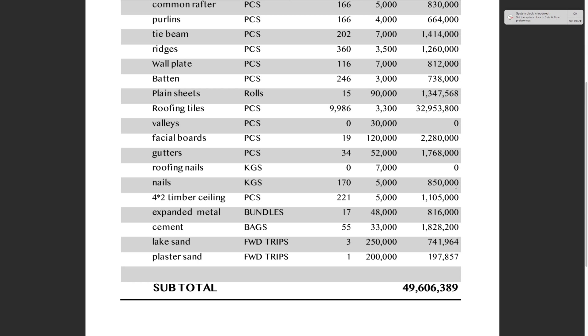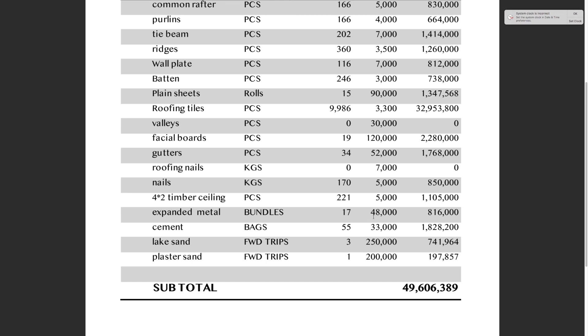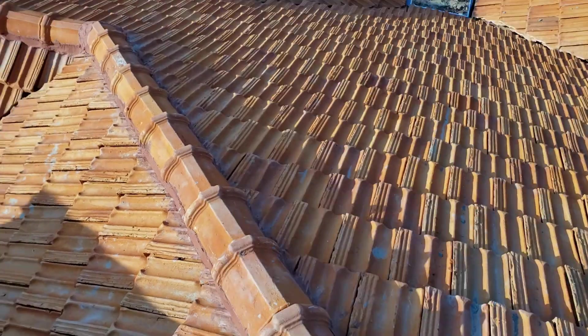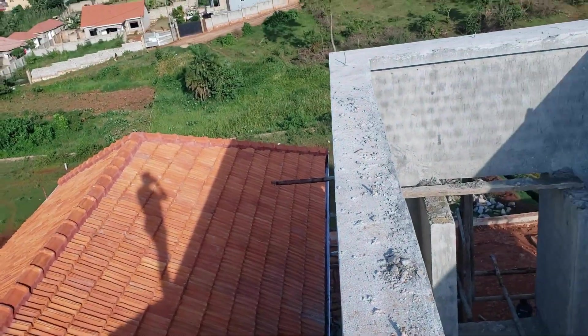Ceiling common rafters — four-by-two timbers, we bought 221 pieces at 5,000 shillings each, costing us 1,105,000 shillings. Expanded metal lath, which sits below the four-by-two ceiling common rafters — we bought 17 bundles at 48,000 shillings each, costing us 816,000 shillings. Cement for mortar casting of the ceiling — we bought 55 bags at 33,000 shillings each, costing us 1,828,200 shillings. We also bought lake sand and plaster sand for the mortar for ceiling casting. The grand total for all roofing materials for this mansion was 49,606,300 shillings.